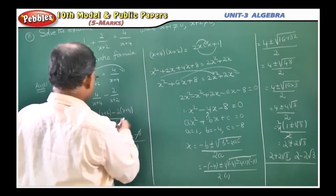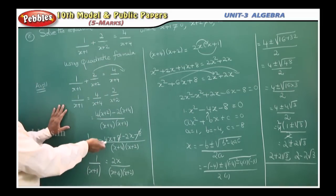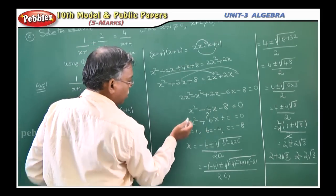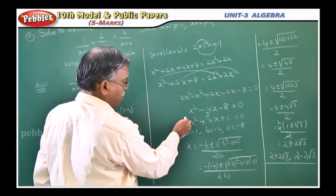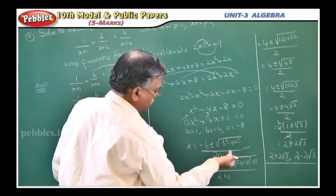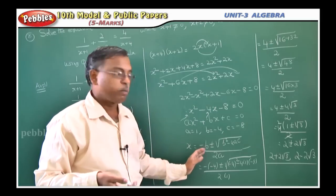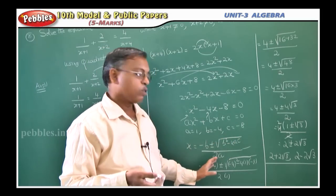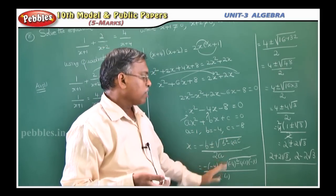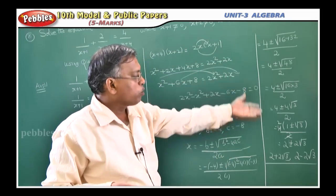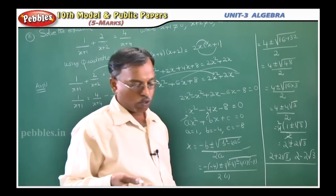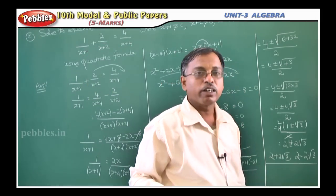Once you get the simplification after taking LCM and rearranging as a quadratic equation, it is very easy to apply the quadratic formula. You must remember the formula: x = [−b ± √(b² − 4ac)] / 2a. Substitute the values of a, b, c, simplify, and the plus and minus signs give you the two roots. This is an important problem.